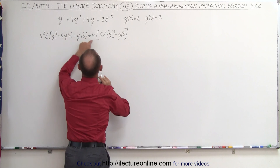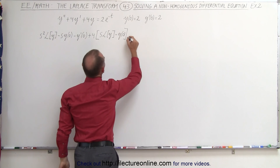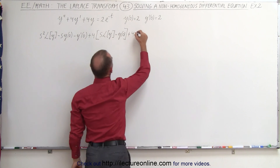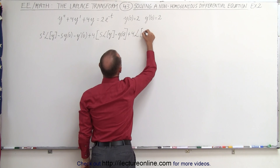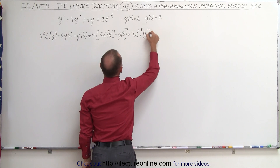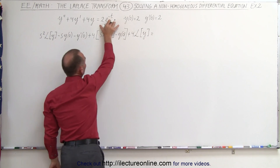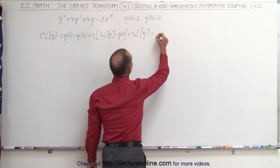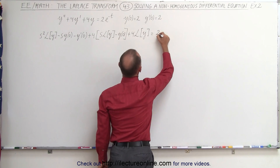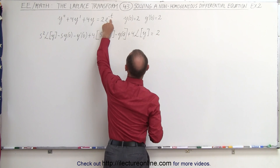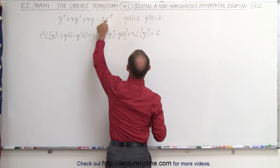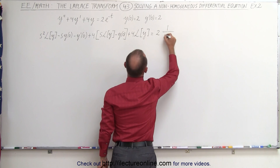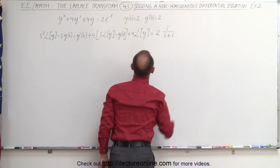All of that is multiplied by the coefficient 4, and then we get plus 4 times the Laplace transform of y. This equals the Laplace transform of the right side, so we write 2 times the Laplace transform of e to the minus t, which is 1 over s plus 1.